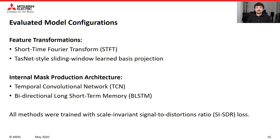In our experiments, we evaluated two feature transformations as well as two internal mask production architectures. For feature transformations, we evaluated both a standard short-time Fourier transform and a TasNet-style sliding window learned basis projection. For internal mask production architectures, we evaluated both temporal convolutional networks and bidirectional LSTMs. In all cases, the models were trained using scale-invariant signal-to-distortion ratio loss.